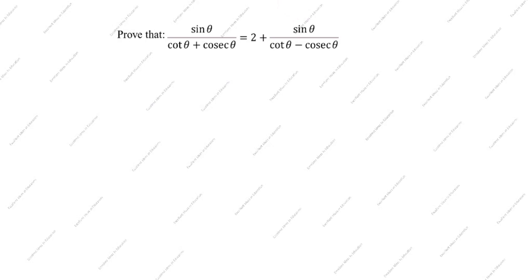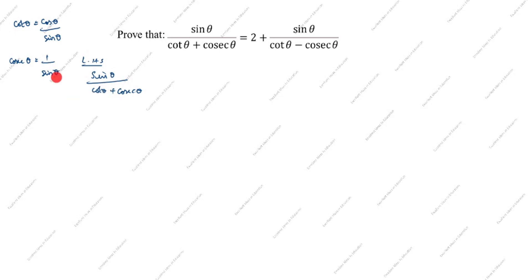First we will take LHS. LHS: sin θ divided by (cot θ plus cosecant θ). What is the cot θ formula? Cot θ is equal to cos θ divided by sin θ. Cosecant θ is equal to 1 by sin θ. So the next step: sin θ divided by (cos θ/sin θ plus 1/sin θ).